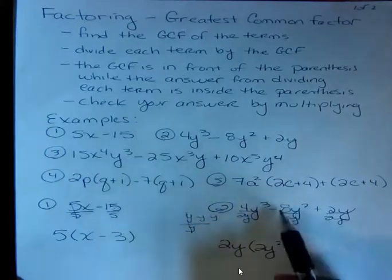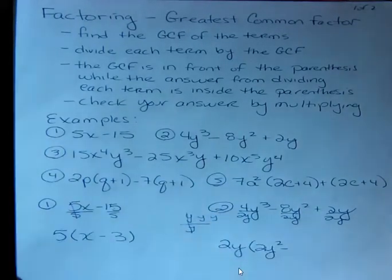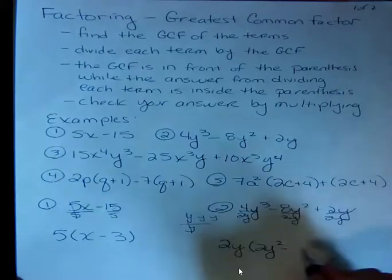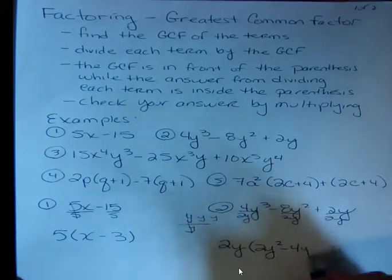Here I have a minus. I want to be true to my signs. I have 8 divided by 2, which is 4. And then I have one additional y on the top, so I get 4y.